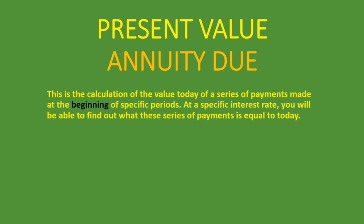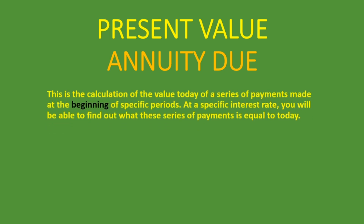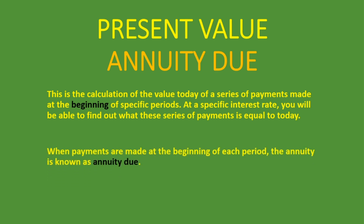So what is the present value of an annuity due? Well, this is the calculation of the value today of a series of payments made at the beginning of specific periods. At the specific interest rate, you will be able to find out what this series of payments is equal to today. When payments are made at the beginning of each period, the annuity is known as annuity due — that is why I highlighted 'beginning' over here.